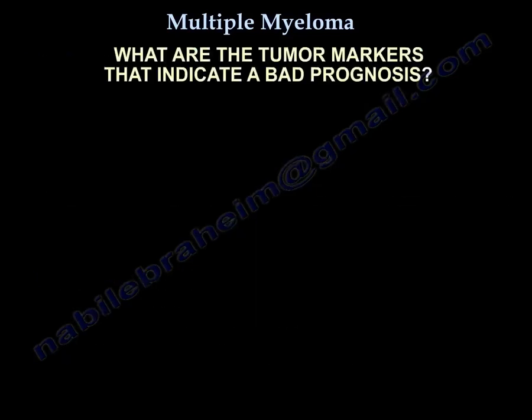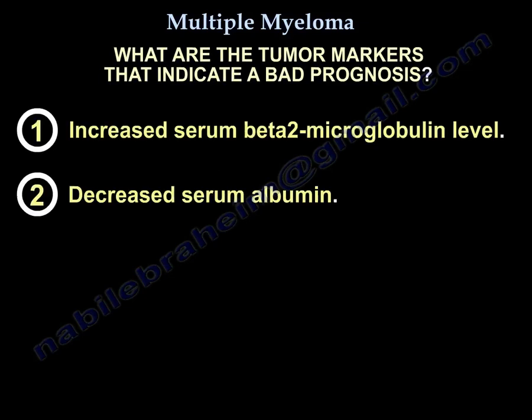The tumor markers that indicate bad prognosis are: number one, increased serum beta-2 microglobulin; and number two, decreased serum albumin. There may be other factors as well.